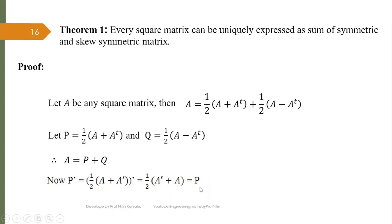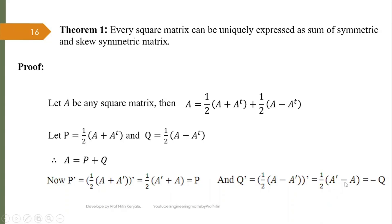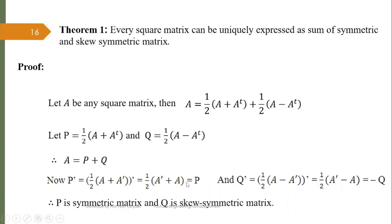Similarly, taking Q^T — the transpose of (1/2)(A - A^T) — we get (1/2)(A^T - A). Taking out the minus sign gives -(1/2)(A - A^T), which is -Q. Therefore Q^T = -Q. Hence P is a symmetric matrix and Q is a skew-symmetric matrix.